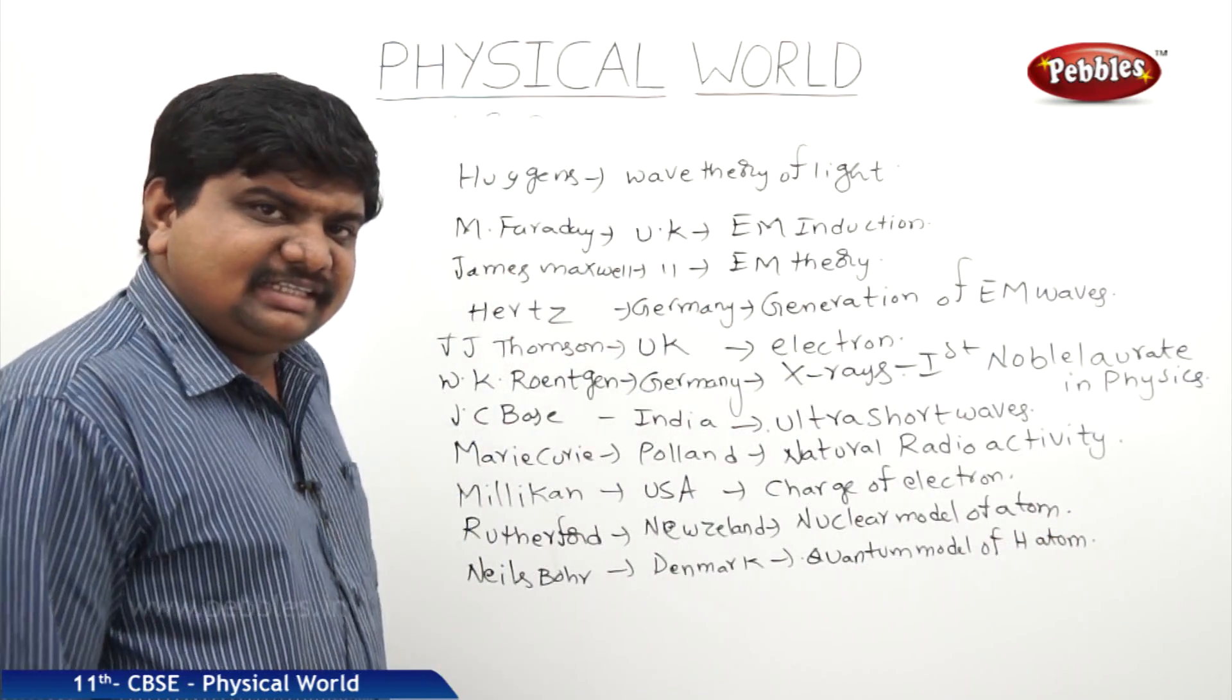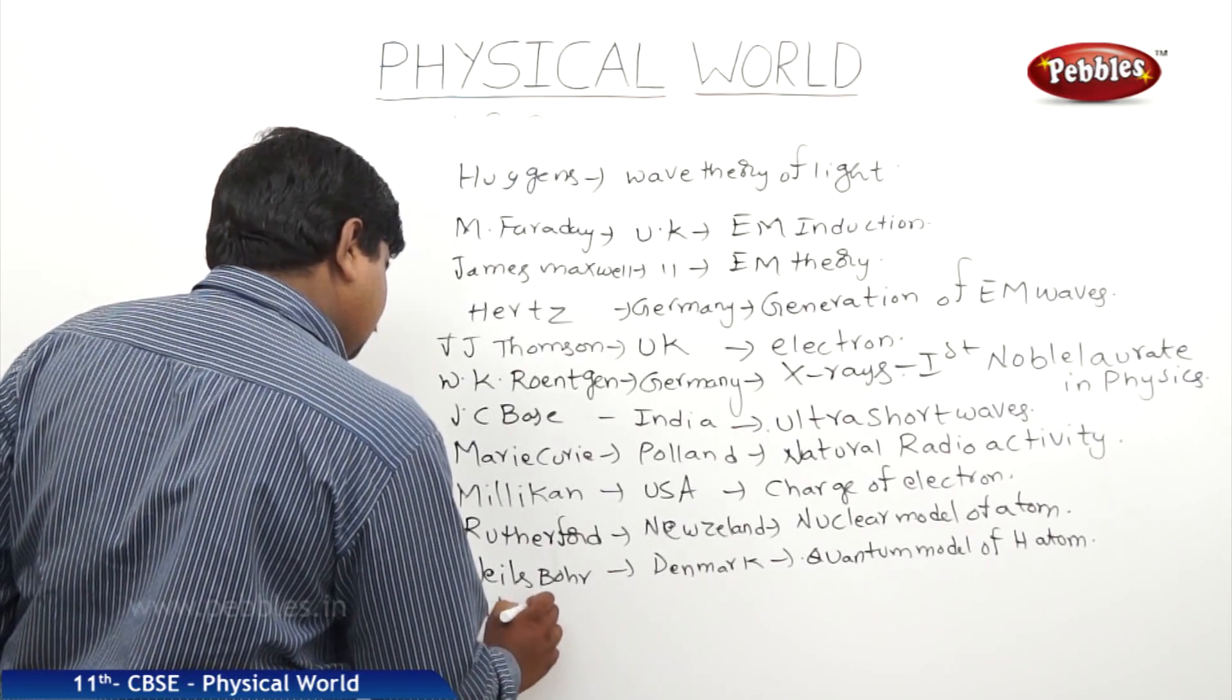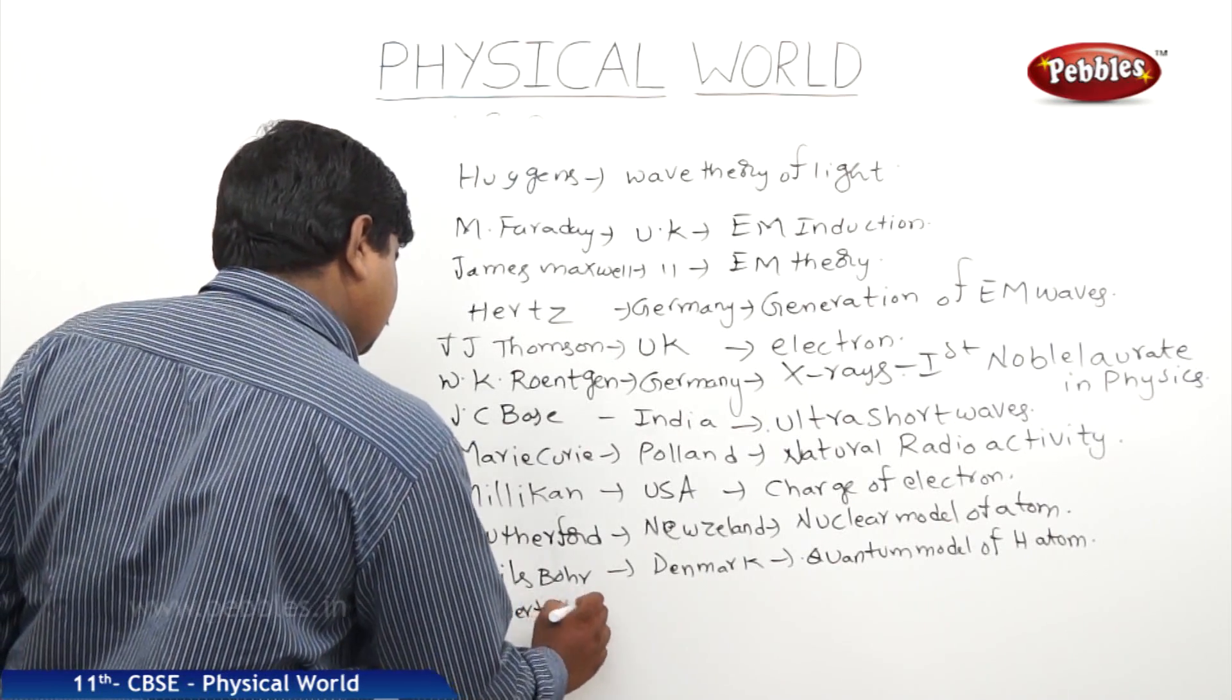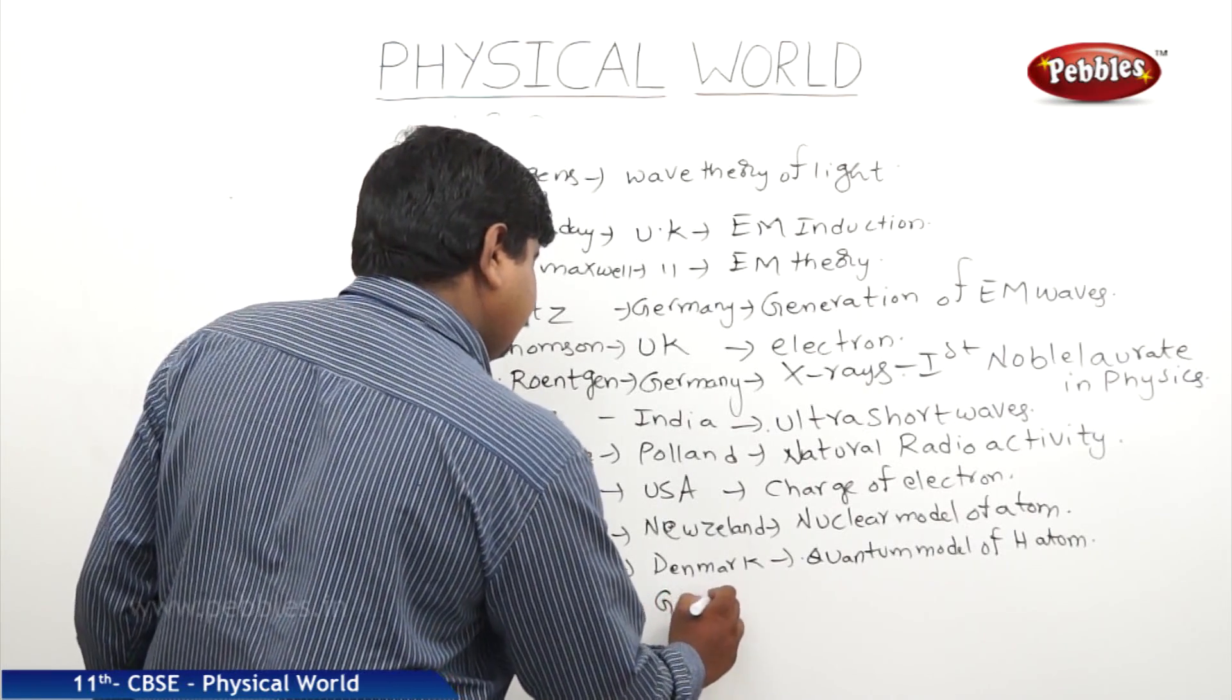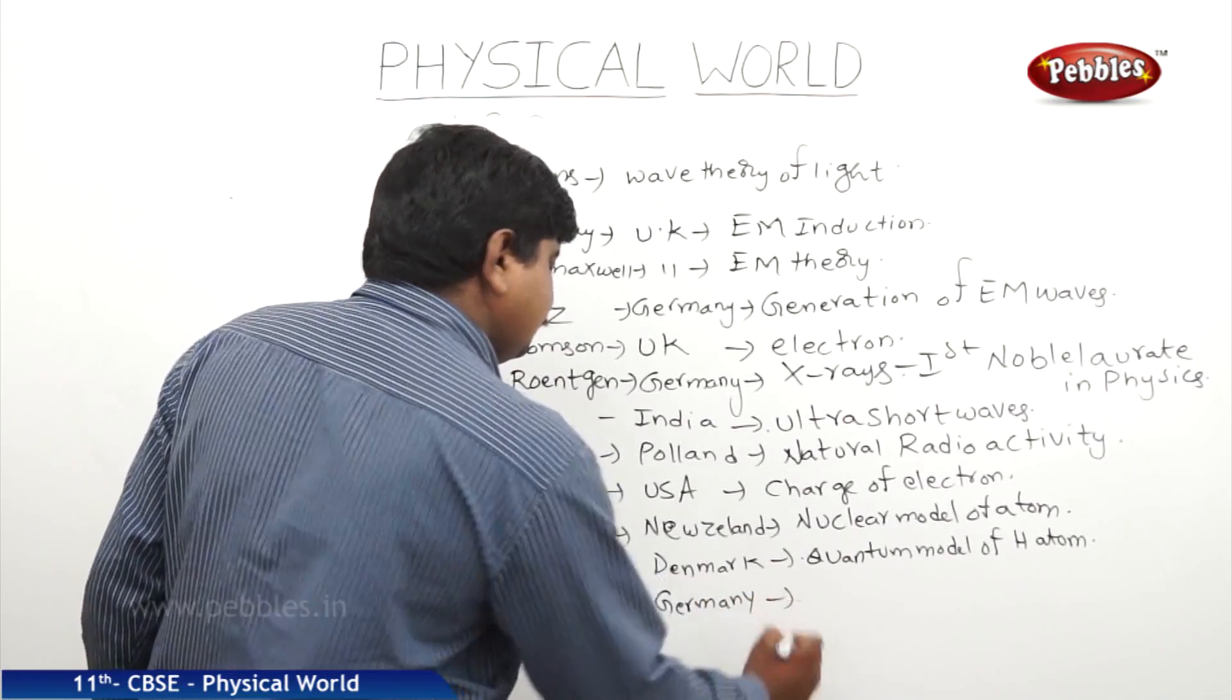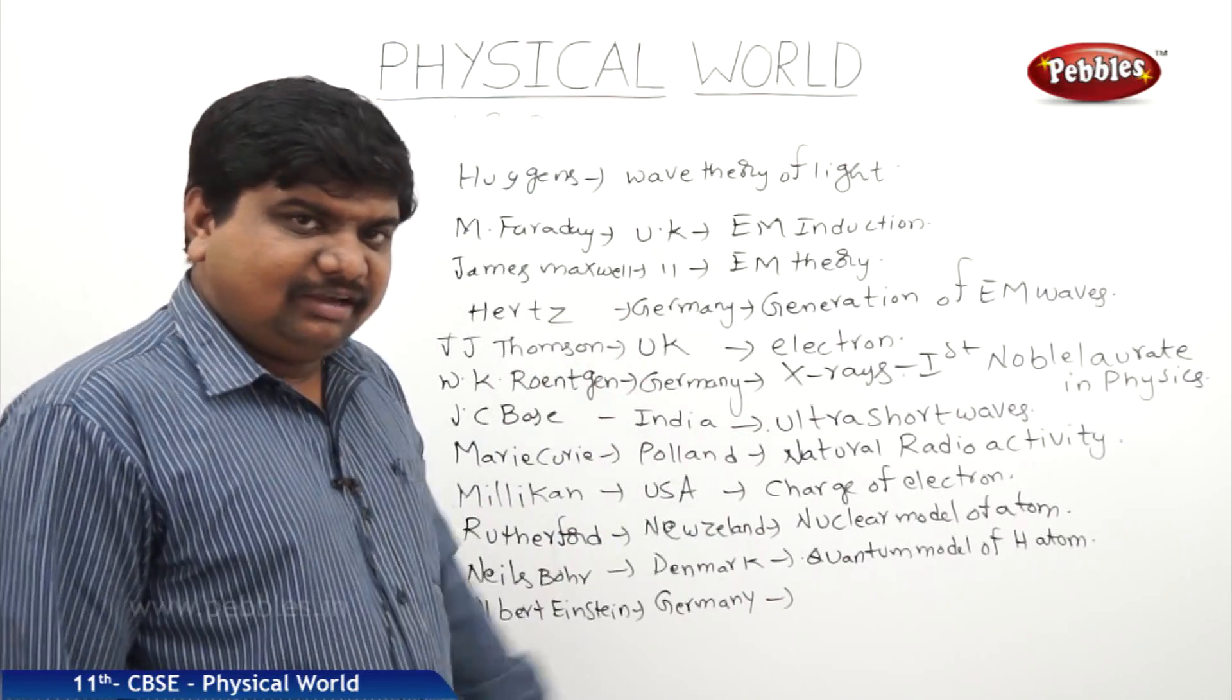The next great scientist was Albert Einstein, from Germany, who has discovered the photoelectric effect and theory of relativity.